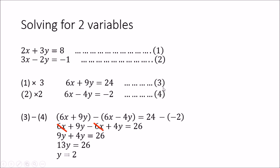We now have equation 3: 6x + 9y = 24, and equation 4: 6x - 4y = -2. Since the coefficients of x are the same, we subtract equation 4 from equation 3. That gives us 6x + 9y - 6x + 4y = 24 - (-2), which simplifies to 13y = 26. Therefore y = 2.